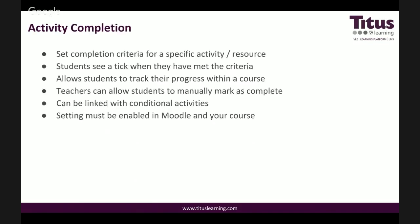Moving on to activity completion. Activity completion allows teachers to set completion criteria into a specific course activity or resource. Students will see a tick icon when they have met the completion criteria, which is a really helpful way of seeing their progress within the course. Teachers also have the ability to allow students to mark activities as complete manually. Activity completion can be easily linked with conditional activities so that access to a certain resource is granted when certain criteria is met — for example, when providing students access to a fun activity such as a game as soon as they've achieved a passing grade with an assignment or quiz.